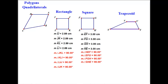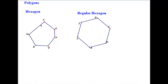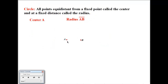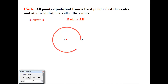Other types of polygons we might encounter are hexagons — six-sided closed figures. A regular hexagon is a special type where all sides are equal in length. Now let's look at circles. All points that are exactly the same distance from a fixed point A form a circle. A is called the center of the circle, and the length AB is called the radius of the circle.